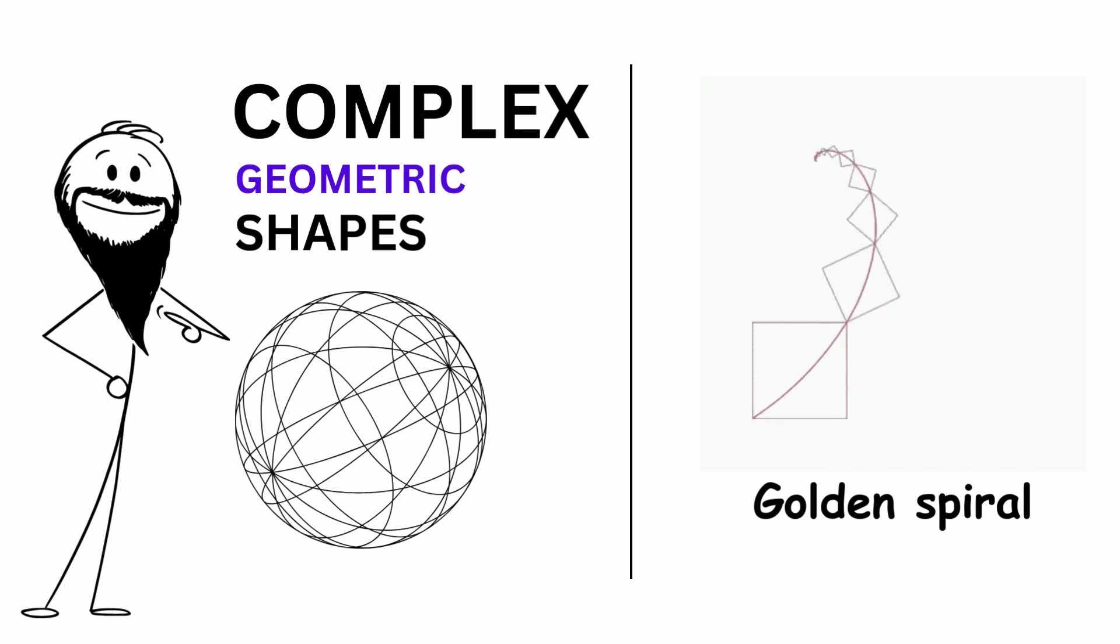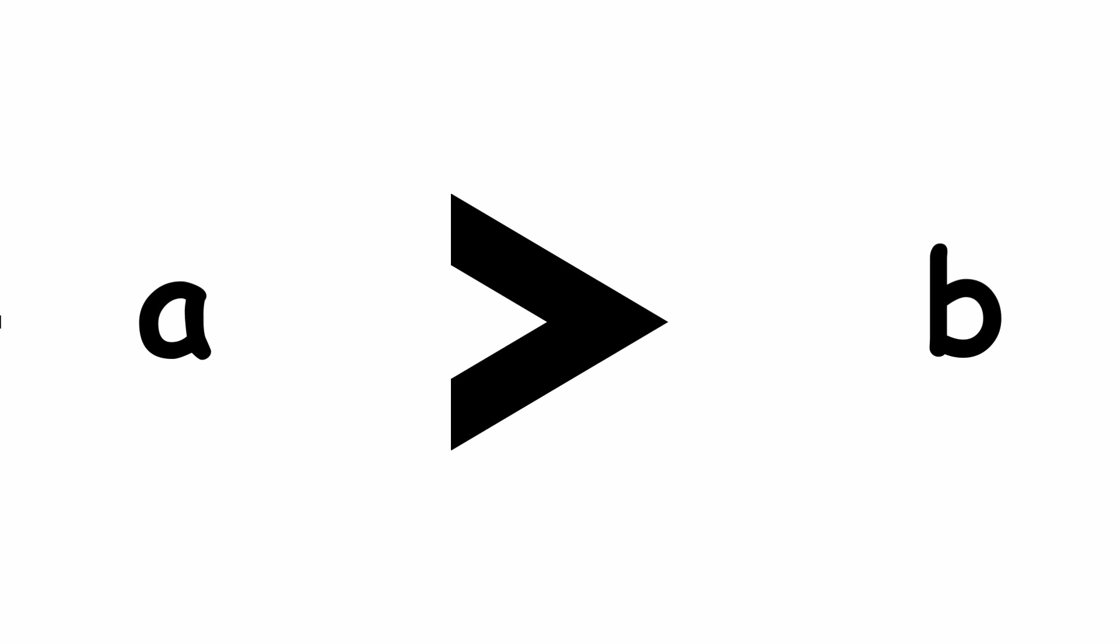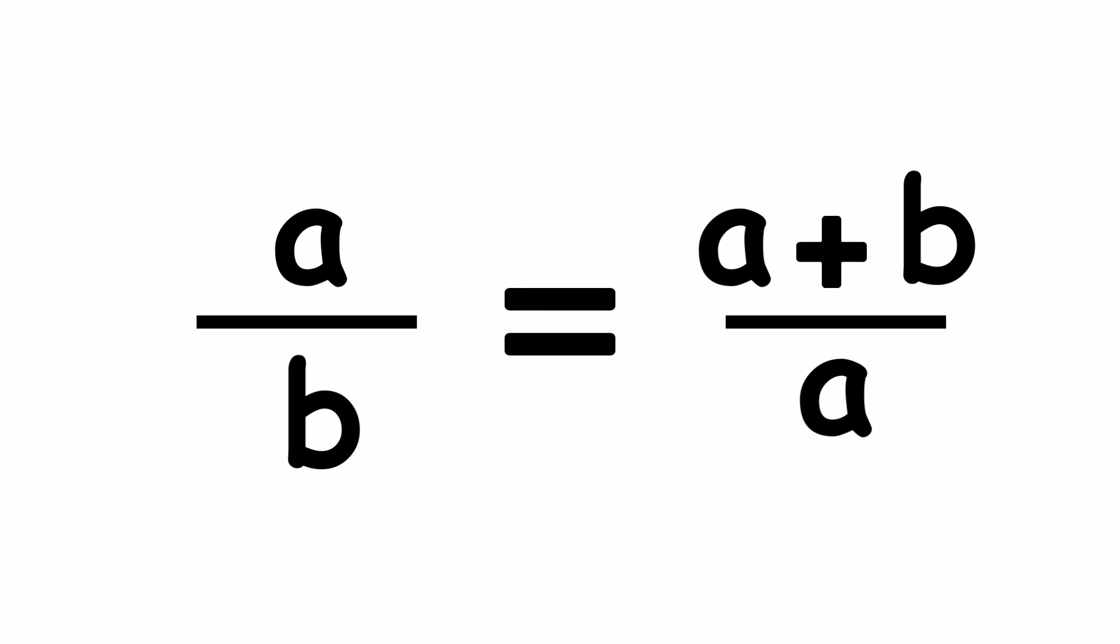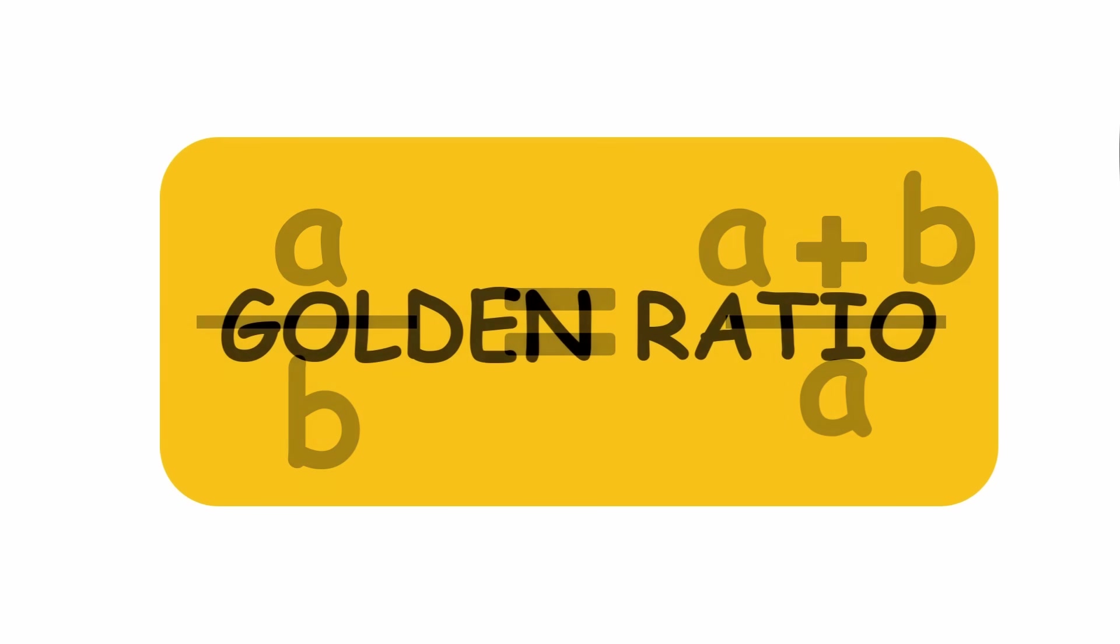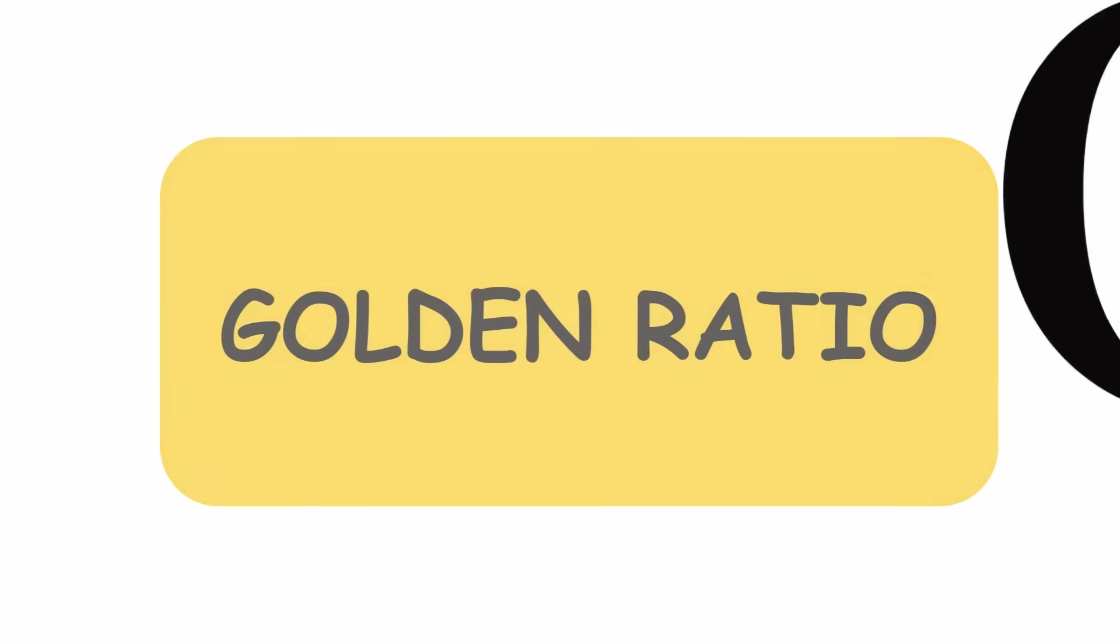Golden spiral. Suppose you have two amounts, and the ratio of the larger amount to the smaller amount, equals the ratio of the sum of the amounts to the larger amount. In that case, this ratio will always be the same special number, the golden ratio, denoted by the Greek letter phi.